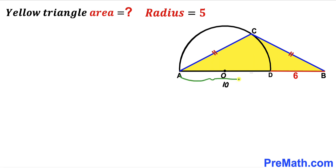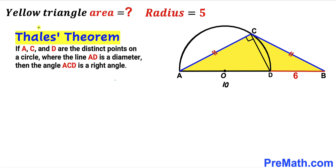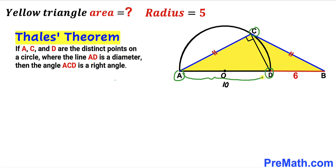So the whole diameter AD is going to be 10 units. Next, I've connected point C and D. Recalling Thales' theorem: if points A, C, and D are distinct points on a circle where AD is the diameter, then angle ACD is a right angle — 90 degrees. In our case, A, C, and D are on the semicircle and AD is the diameter, so angle ACD is 90 degrees.